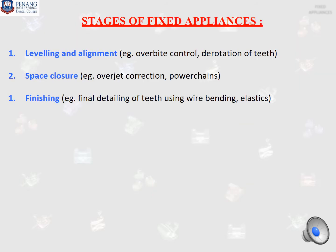These are the three main stages of fixed appliances. Stage one is leveling and alignment — the main objective is overbite control and derotation of teeth. Stage two is the space closure stage — the main objective is further overjet correction, and we place power chains to close the space. The final stage is finishing, where wire bending techniques are used for final detailing of teeth, and sometimes elastics are used to achieve proper occlusion.